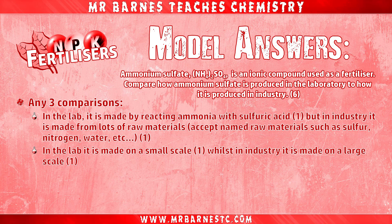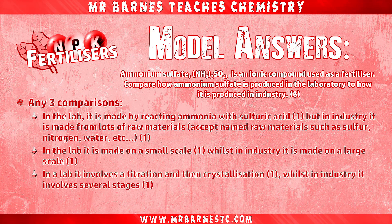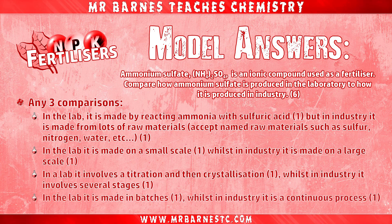The third comparison is about production method: in the lab it involves a titration and then crystallization — that gets you one mark — and in industry it involves several stages, which gets you the second mark for this point. Finally, the process: in the lab it's made in batches — one mark — and in industry it's a continuous process — that's your comparison mark.